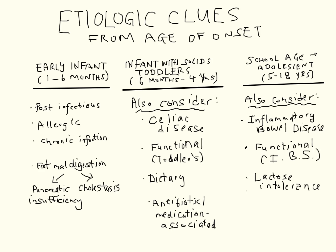Celiac disease and functional diarrhea are common throughout childhood, with the latter being defined as toddler's diarrhea in children under four years old and irritable bowel syndrome in patients five or older. Allergy and infectious-related causes remain possible but decline with age, particularly allergy beyond the first year of life. Isolated carbohydrate malabsorption begins at any age, with excess fructose or sorbitol a stronger consideration in toddlers, and primary lactase deficiency increasing in incidence with age. Finally, IBD incidence increases throughout older childhood and adolescence.